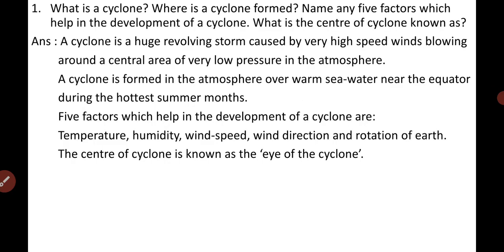The first question: What is a cyclone? Where is a cyclone formed? Name any 5 factors which help in the development of a cyclone, and what is the center of a cyclone known as? For the first part, a cyclone is a huge revolving storm which is caused by very high speed winds blowing around a central area of very low air pressure in the atmosphere.